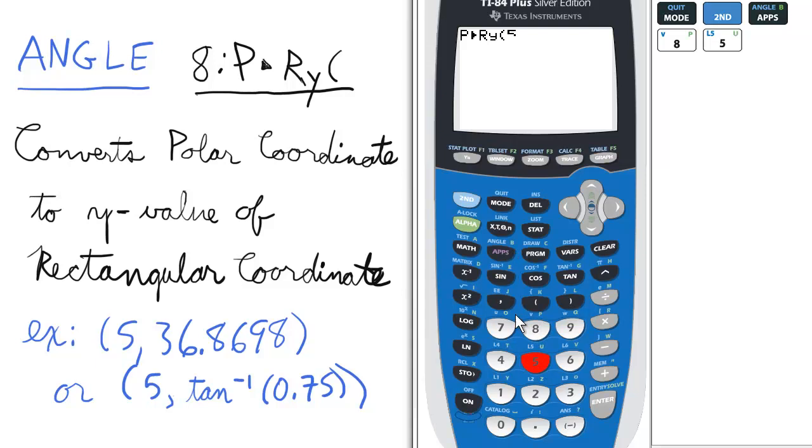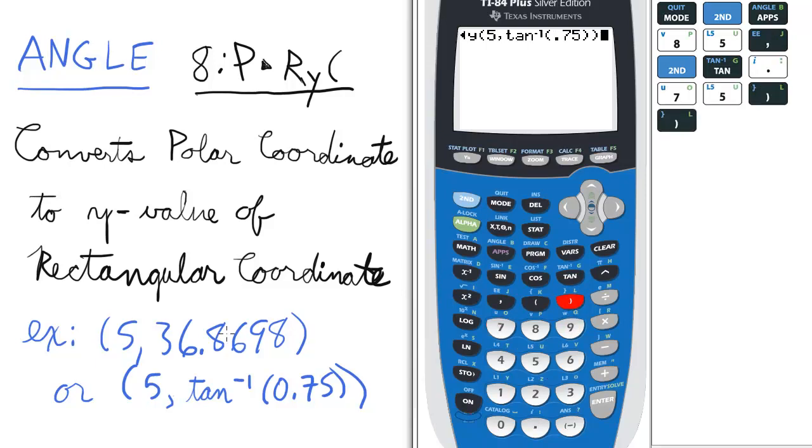We'll enter our old standby, 5 comma inverse tan of 0.75. If you wanted to write it out, you can enter 5 comma 36.8698, we'll get approximately the same answer.